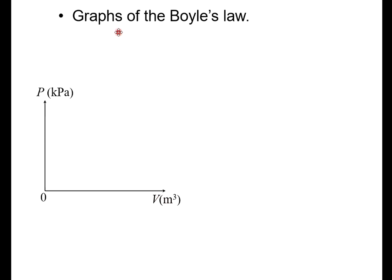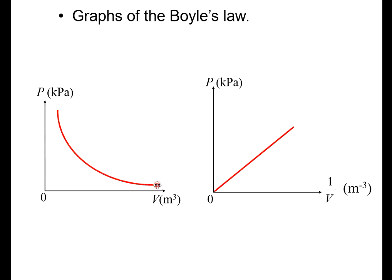The graph for Boyle's Law - because it's pressure and volume - if the pressure unit is kilopascal and the volume is meter cubed, it will be an inversely proportionate graph. But if we want a directly proportionate graph, it's going to be pressure in kilopascal versus 1 over volume, which means meter to the power of negative 3, giving a directly proportionate graph.